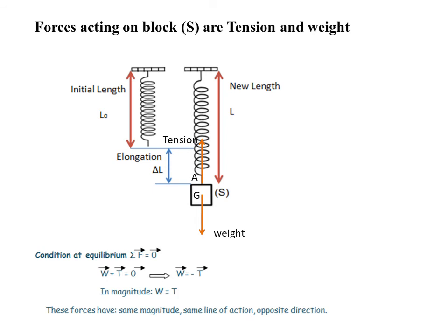Condition at equilibrium: sum of external forces equals zero vector. W vector plus T vector equals zero vector. This means W vector equals minus T vector. Tension and weight have opposite directions while they have same magnitude and same line of action.